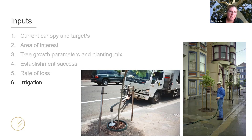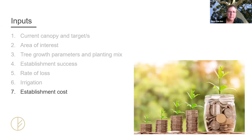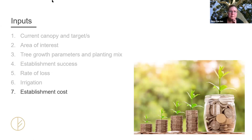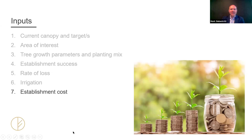The sixth input is whether you're going to be irrigating or not, which obviously has impacts on how fast a tree can grow. And then the final input is looking at your establishment costs — how much it costs on average to plant a tree and manage that tree, usually for the first two or three years of establishment.